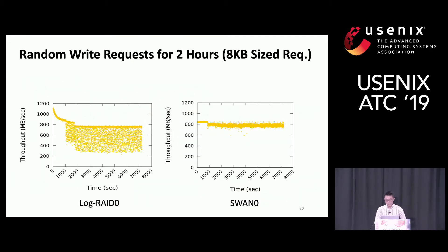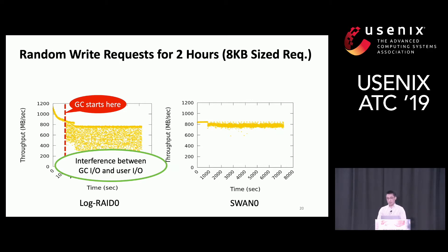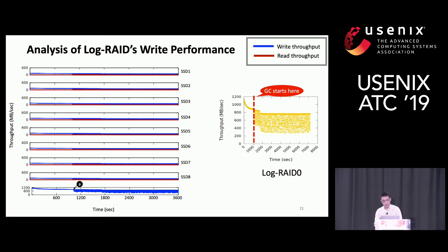Now I'll show you the result of random write performance for Log-RAID-0 and SWAN-0. In the case of Log-RAID-0, after garbage collection starts, the bandwidth fluctuates because of interference between garbage collection IO and user IO. In the case of SWAN, SWAN provides consistent performance even after garbage collection starts. Let's take a closer look at the performance results.